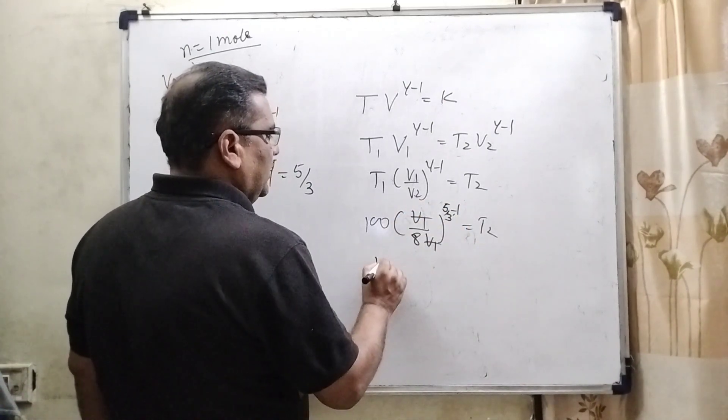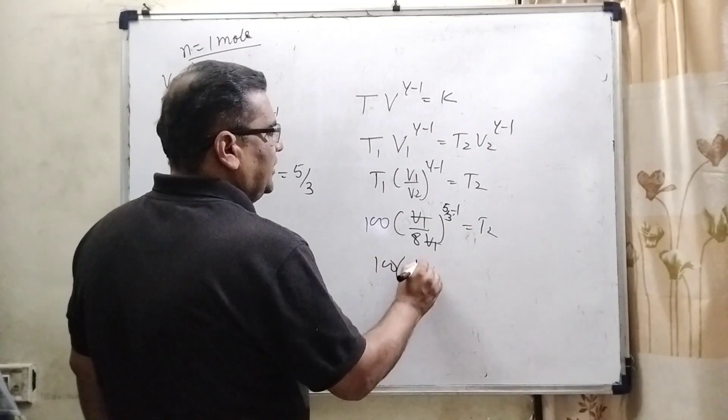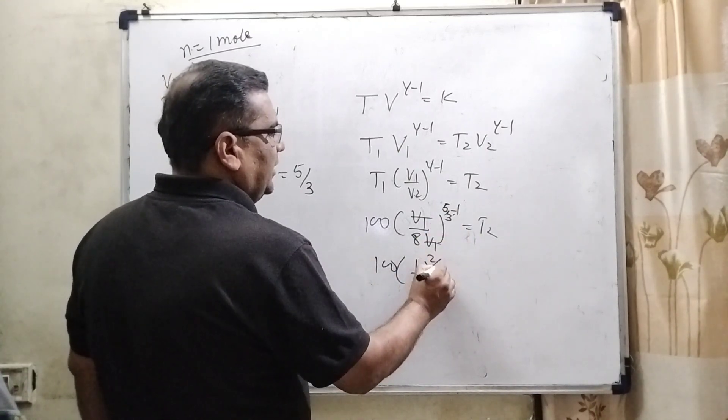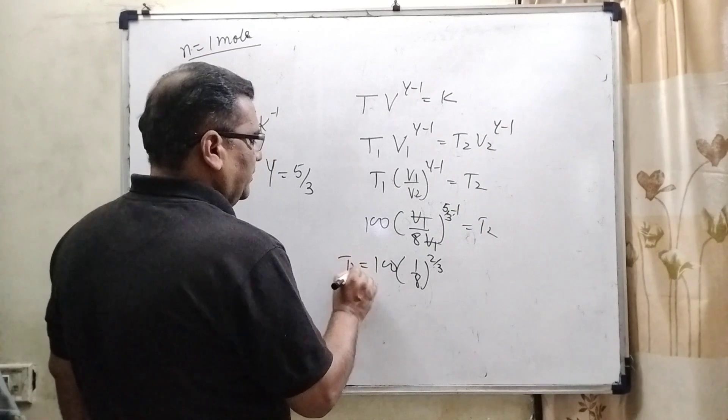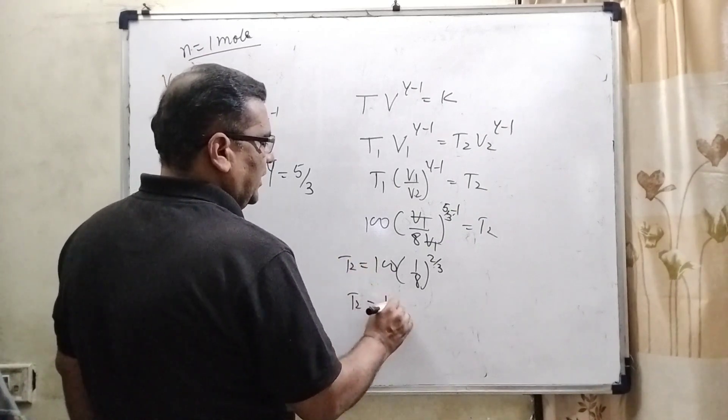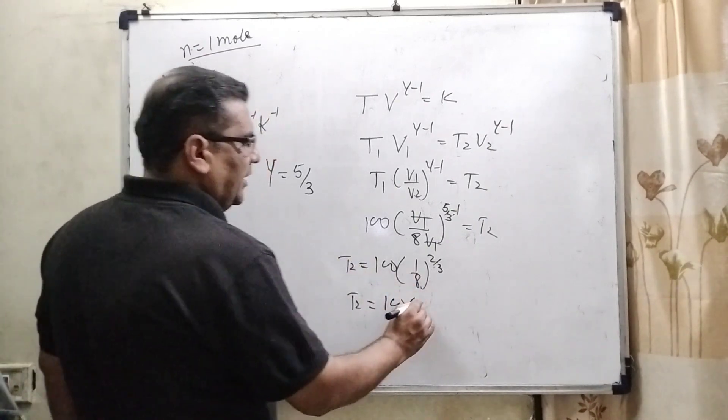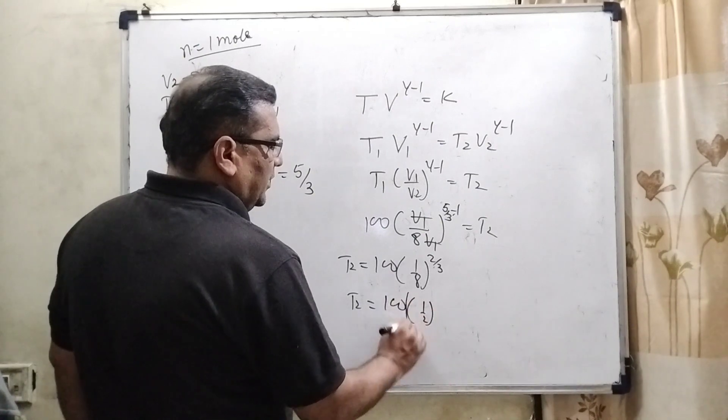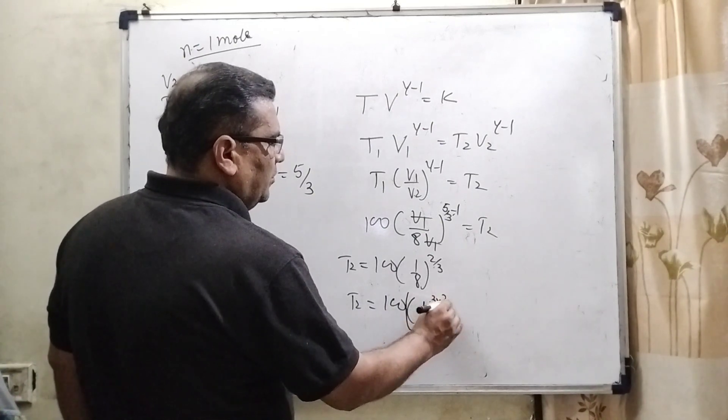V1 cancels. 100, 1 by 8, 2 by 3 equal to T2. So T2 can be written as 100, 1 by 8 can be written as 1 by 2 raise to power 3, times 2 by 3.